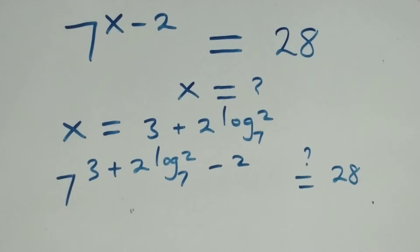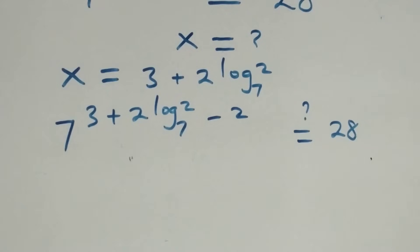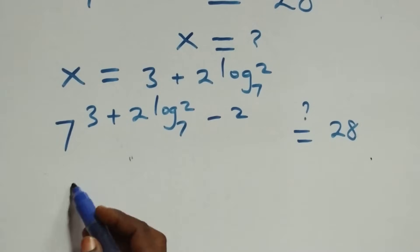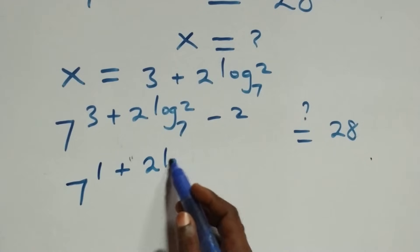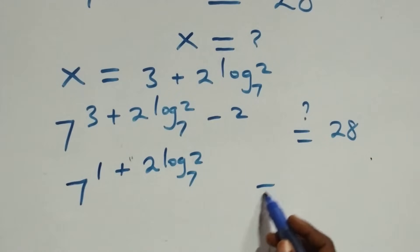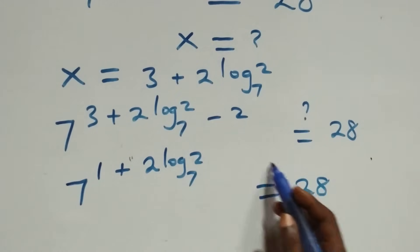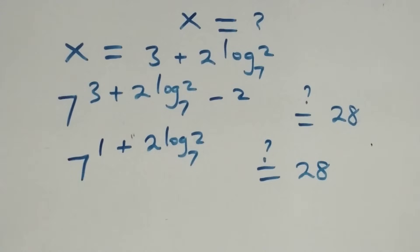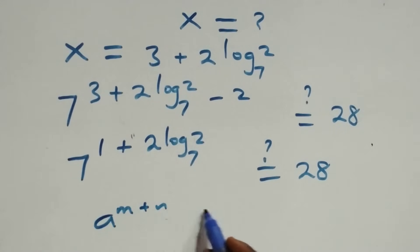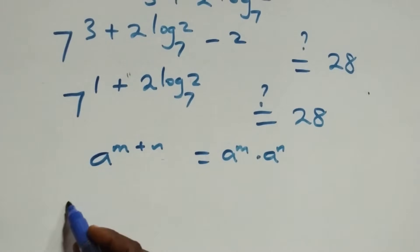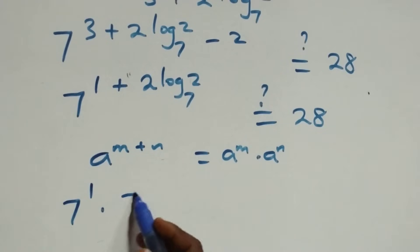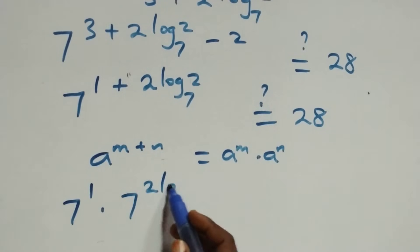This follows the law of indices: when we have a raised to power m plus n, it is the same thing as a raised to power m times a raised to power n. So what we have becomes 7 raised to power 1 times 7 raised to power 2 log 2 to base 7, equals 28. We can reverse the power-log relationship and 2 comes up, giving 7 times 7 raised to power log of 2 squared to base 7.